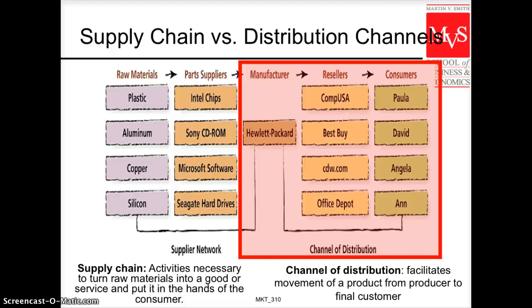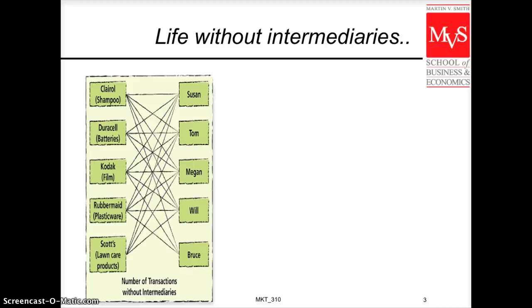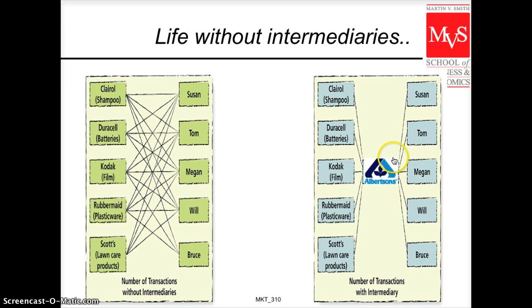Let's think for a moment about what life without those channels of distribution would be. Think of every single product you use in the morning — shampoo, batteries, milk. Imagine every single consumer on the planet interacting directly with the manufacturer. Look at the number of transactions that would generate. Instead, you go to a middleman — Albertson, Target, Walmart, Costco — and they facilitate that transaction process between all these manufacturers and consumers, making our lives easier.